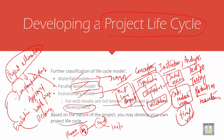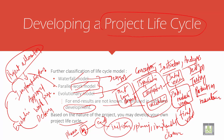The project life cycle has four main stages: initiation, planning, implementation, and closure.